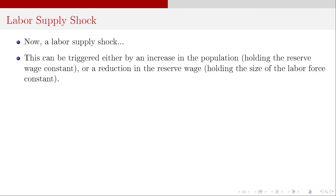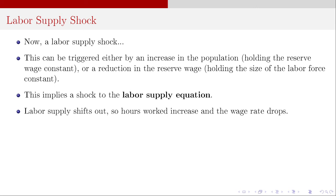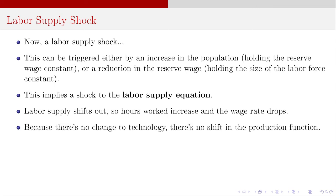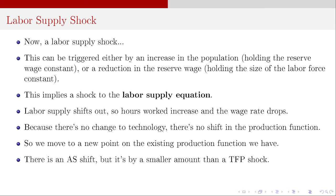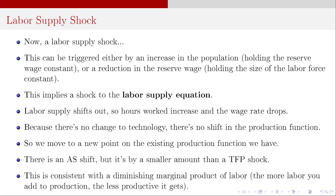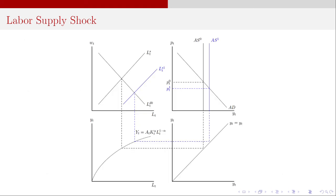The labor supply shock — triggered either by an increase in the population holding the reservation wage constant, or a reduction in the reservation wage holding the labor force size constant — leads to a shock in the labor supply equation. Labor supply shifts out, hours worked increase, and the wage rate drops. But there's no change to technology, so there's no shift in the production function — we're just moving to a new point on the existing production function. There's an aggregate supply shift, but by a smaller amount than under the TFP shock, consistent with diminishing marginal product of labor. So there's a tiny reduction in the price level and a tiny reduction in the real interest rate.